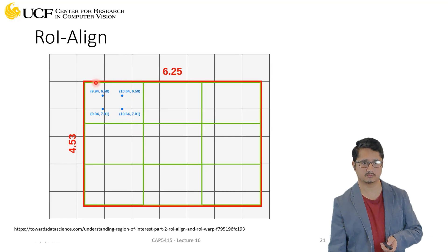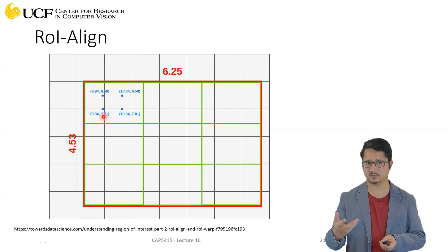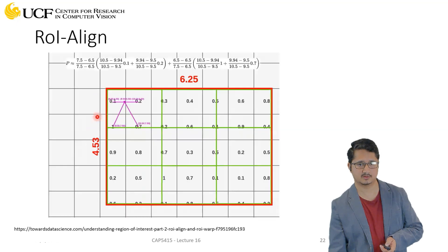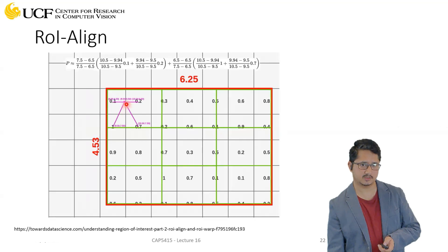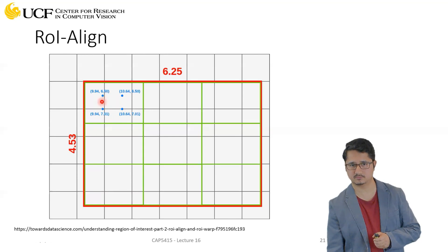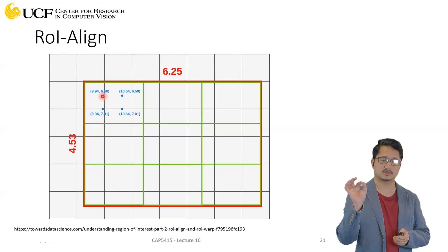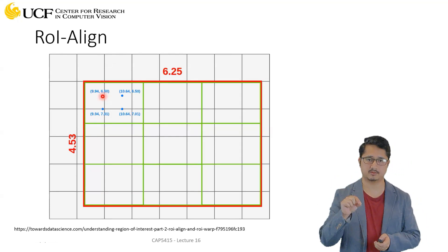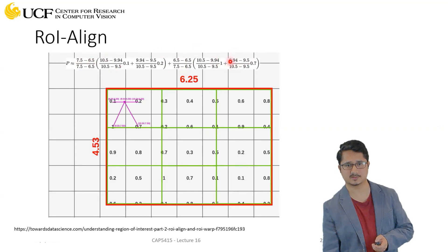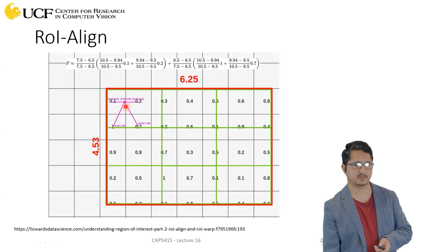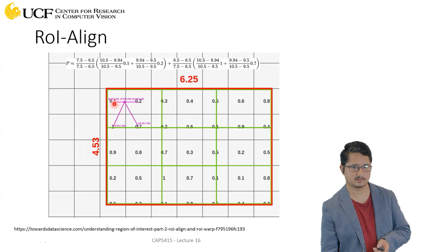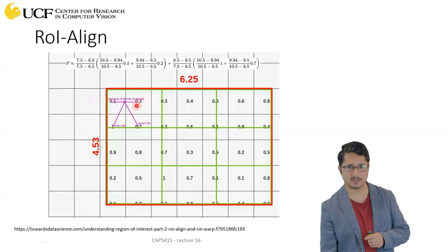Each cell is again divided into a 3x3 sub-grid, and the idea is to have just four sample points per cell. Now for each of those four points, you will get a value by finding the closest four pixel values in the feature map. You then compute the distance from those four values and use the bilinear interpolation equation discussed in the last lecture. So for the first point, you find the four closest pixels.